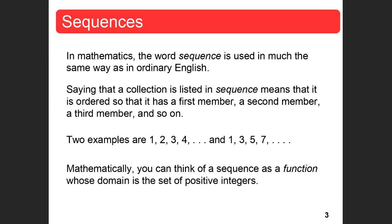In mathematics, the word sequence is used in much the same way it is in ordinary English. Saying that a collection is listed in sequence means that it is in order, so that it has a first member, a second member, a third member, and so on. Two examples are 1, 2, 3, 4 and 1, 3, 5, 7. Mathematically, you can think of a sequence as a function whose domain is a set of positive integers.